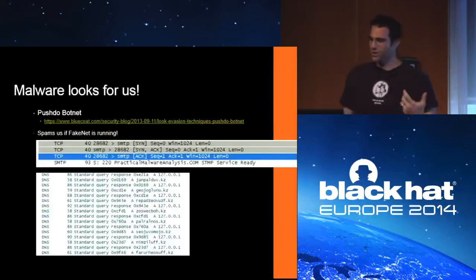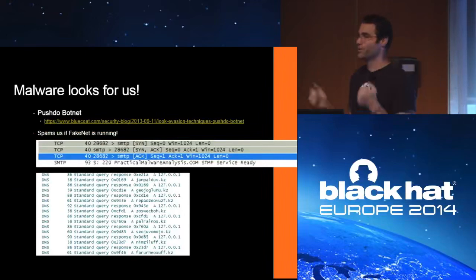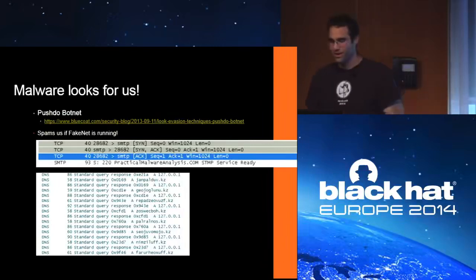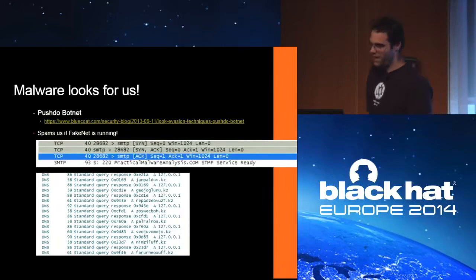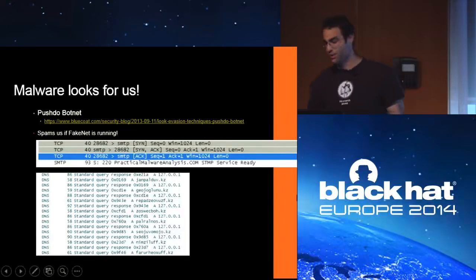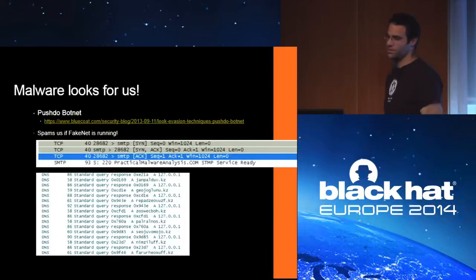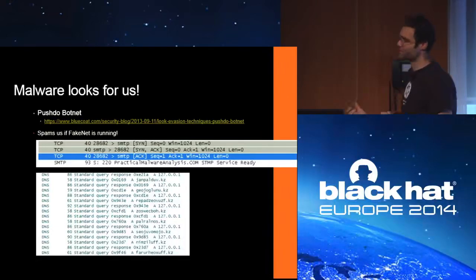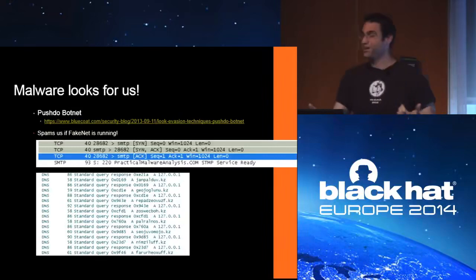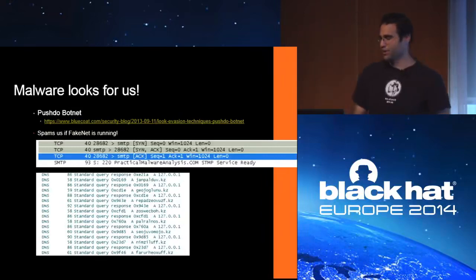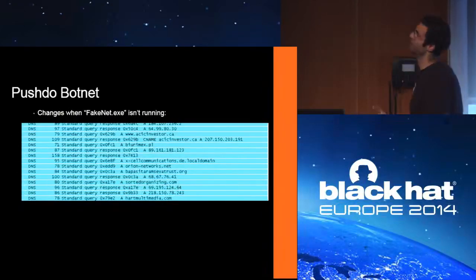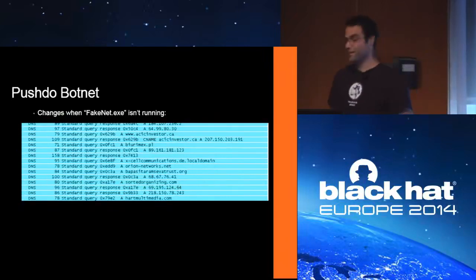One of the things that we thought was pretty cool — you know your tool has made it when botnets start looking for you. This is from a Blue Coat security advisory about the PushDo botnet. Running it with FakeNet for analysis, they noticed that after a bunch of random-looking query requests, it would actually try to make an SMTP connection to practicalmalwareanalysis.com — which is the website for our book. That's because it was looking for FakeNet. If you run it without FakeNet, it uses different addresses.